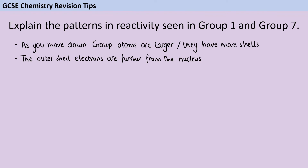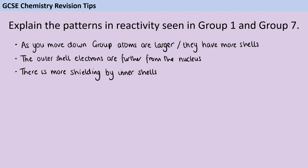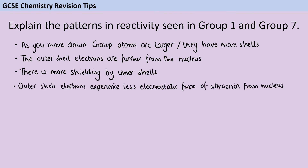In addition, the larger the atom is, the more inner shells there are in between the outer shell electrons and the nucleus, and these are going to cause what we call shielding. What that means is that those outer shell electrons are experiencing less of the strong electrostatic force from the nucleus. The negative electrons are attracted to the positive nucleus, but those inner electrons are kind of getting in the way and stopping them from experiencing this.